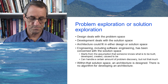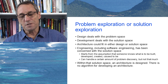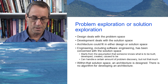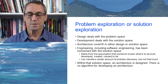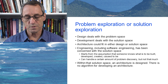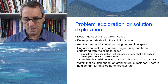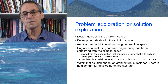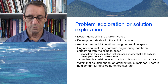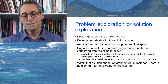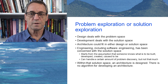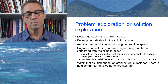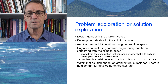The nature of the problem depends on possible solutions. Classical engineering, including software engineering, has normally been concerned with the solution space — starting from the assumption that somebody knows what has to be done and you're simply told to do it. Within that solution space an architecture is designed, but there is no algorithmic way of coming up with the architecture; there is a certain amount of design and creativity involved. So we have a problem space focused on discovering the problem, and a solution space focused on implementing a solution, and architecture fits across both.